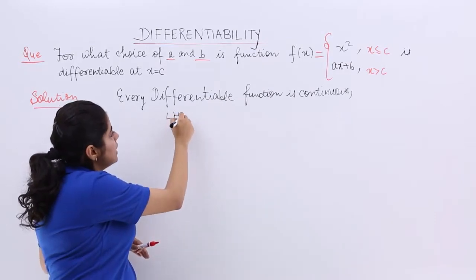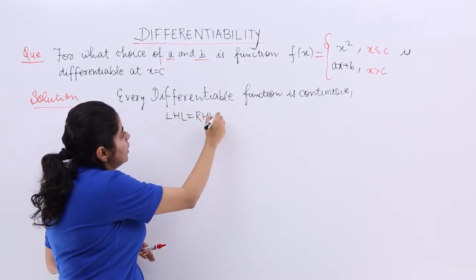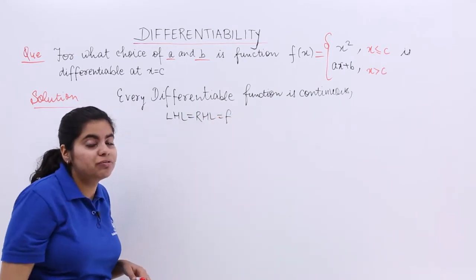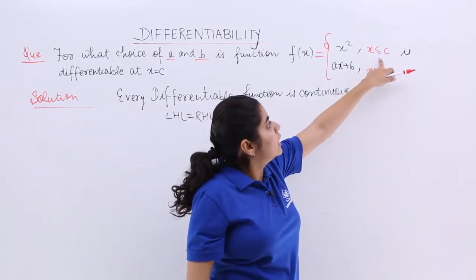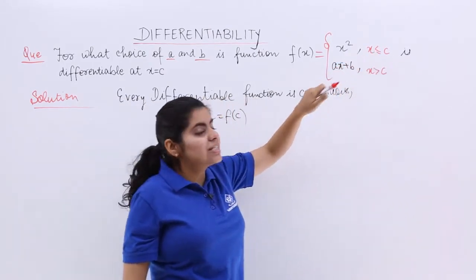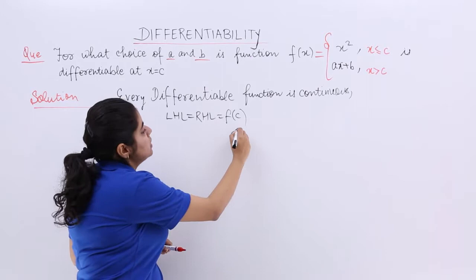Now, continuity says what? Continuity says LHL should be equal to RHL should be equal to the value of the function. What is the value of the function at the given value? Given value is c. When x is equal to c, it is x square, so that means it should be c square.